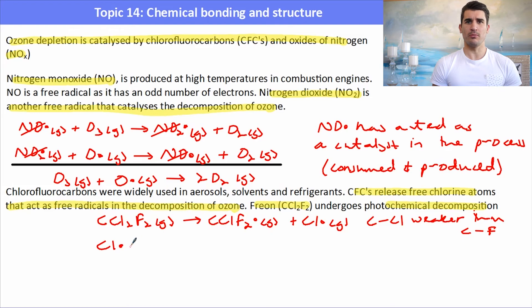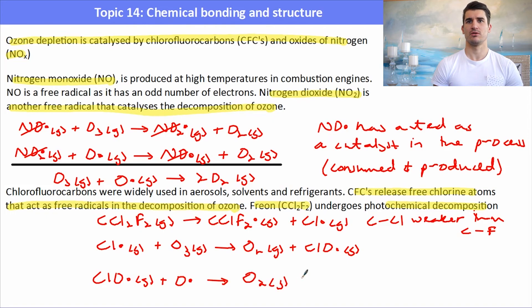Once we've formed that chlorine radical it can react with ozone to produce O2 gas and a ClO radical. That ClO radical can go on to react with another oxygen radical to form O2 gas and another Cl radical.